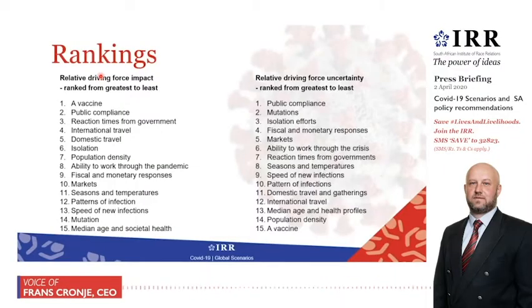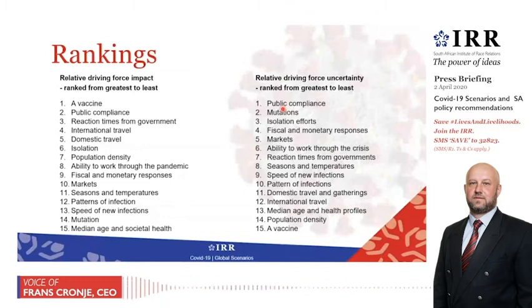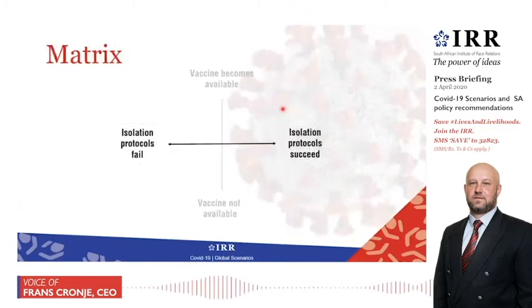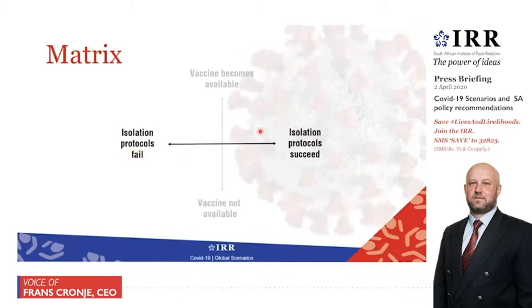When we build scenarios, what we do is we seek to select out of the driving forces of greatest impact an axis of a scenario matrix. And we seek to match that with an axis drawn out of the factors of greatest uncertainty. The horizontal axis is the uncertainty axis, and our greatest uncertainty, as shown on the previous graphic, is isolation protocols and public compliance — will they succeed for as long as they are needed, or will they fail when they are needed the most? That's the spectrum of possibility.